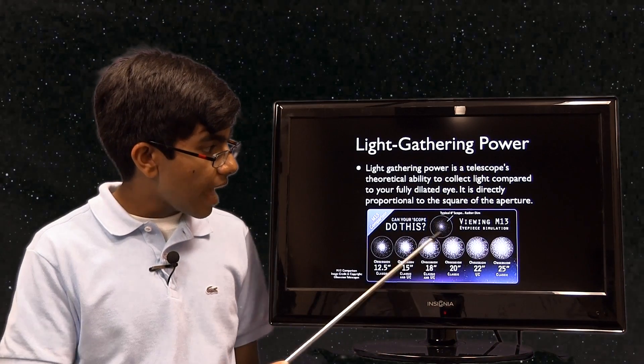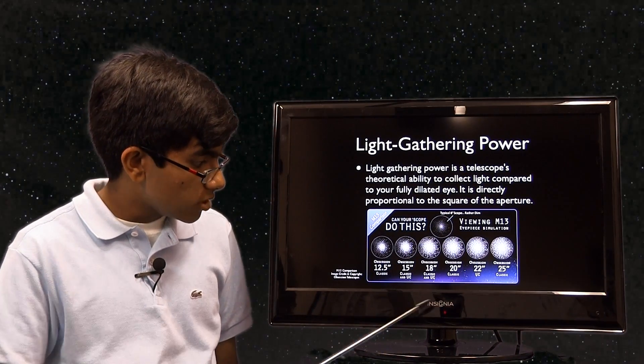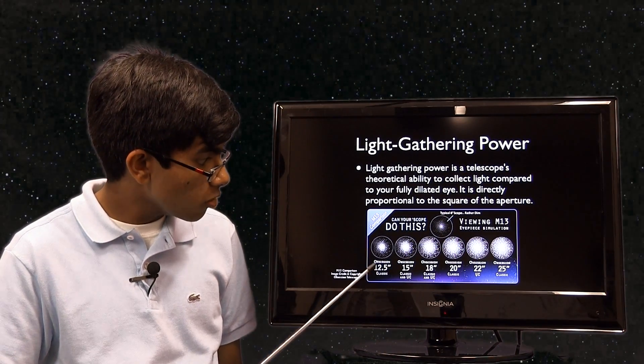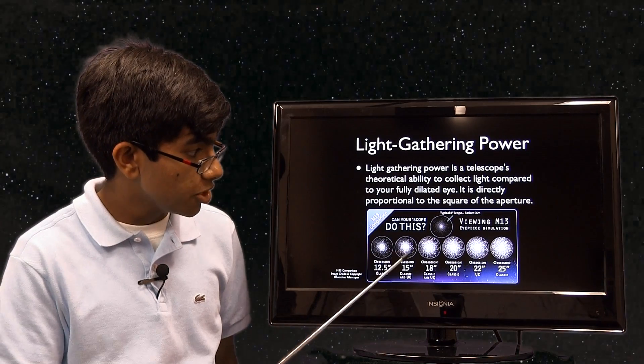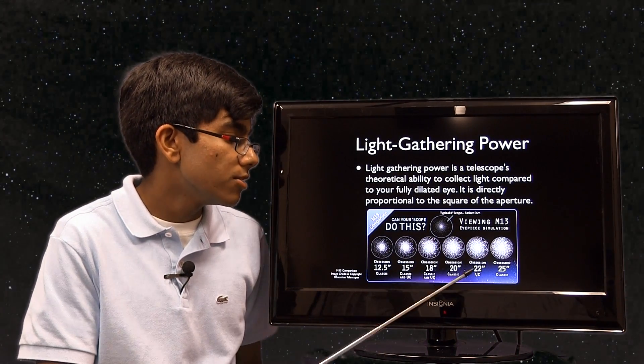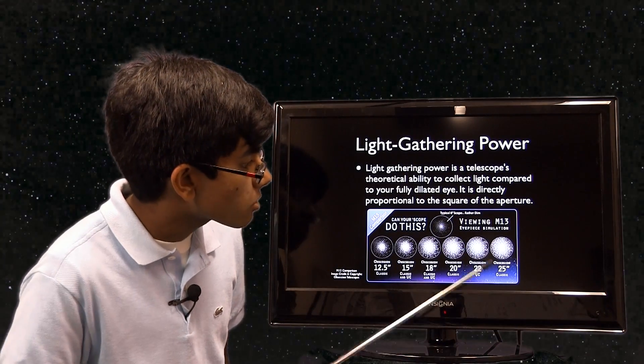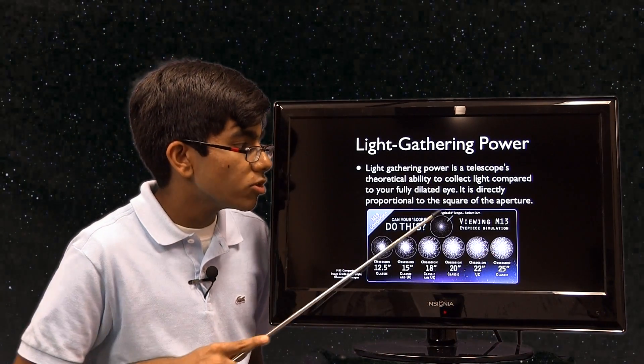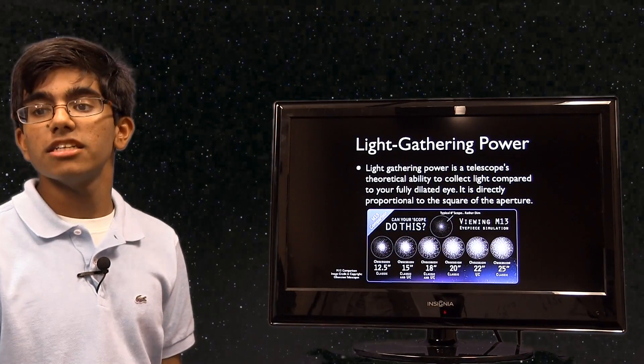Here, this is where you can see M13. Now look at a 12.5 inch telescope—you can see more. 15 inch, you can see more. 18 inch, you can see even more. 20, even more. 22, even more. And 25, you can see so much more detail than you can see with the 8 inch.